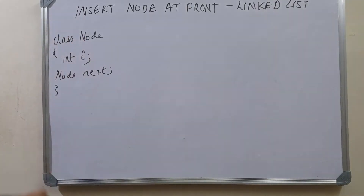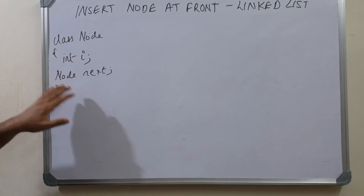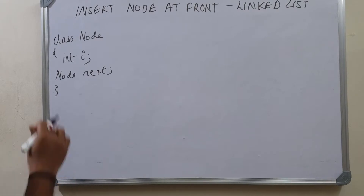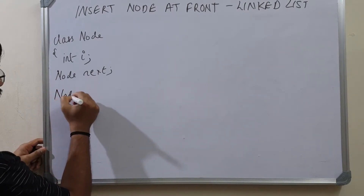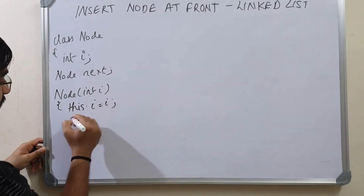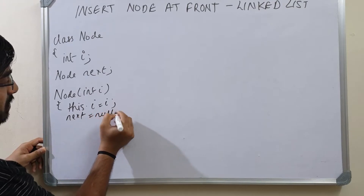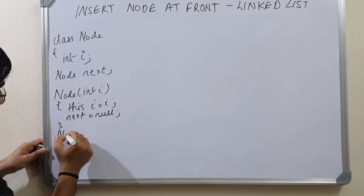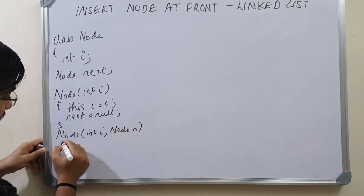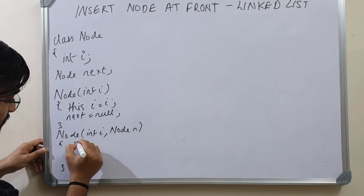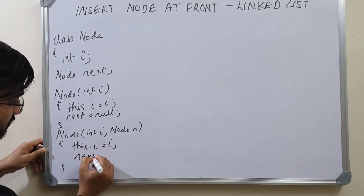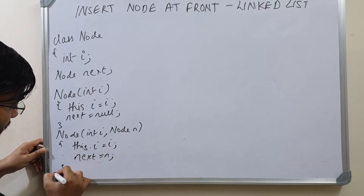This is the node class we are using. It has an integer i that stores the data. We have a variable of type node next which stores the link to the next node. I am going to add two more constructors here: one that takes int i, sets this.i equal to i and next to null, and another that takes int i and node n, setting this.i equal to i and next equal to n.